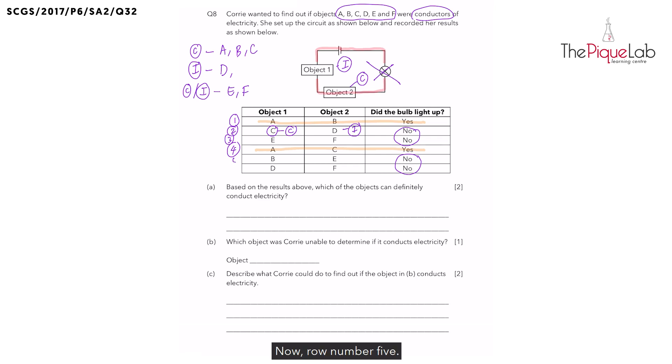Now row number five. We have objects B and E in the circuit. Remember, B was also a conductor. But yet the bulb did not light up. What does that tell you about object E? Did it allow electricity to flow through? Nope. Object E must be an electrical insulator. So I can move object E from the suspected insulator to a confirmed list.